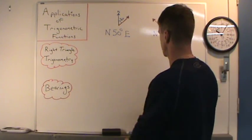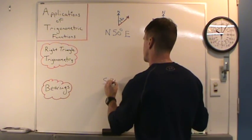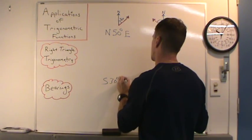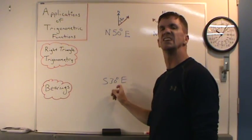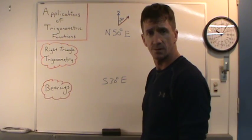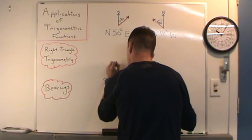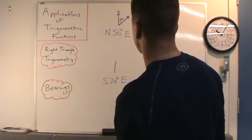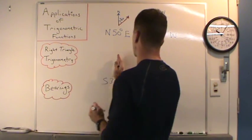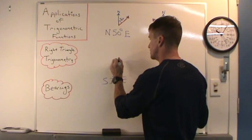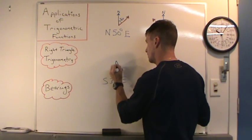Let's do two more. How about S 30 degrees E? We read this as 30 degrees east of due south. We're gonna start by drawing due south, go straight down, and go 30 degrees to the east — right in there.